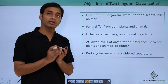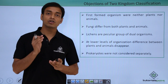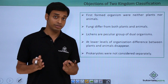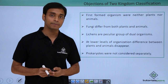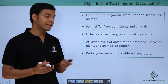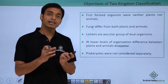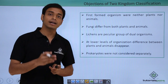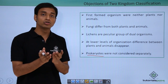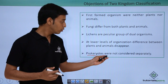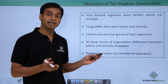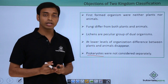Lichens are a peculiar group because they are not a single organism; they are formed by the symbiotic association between a fungus and an alga. At lower levels of organization, the differences between plants and animals disappear. Most importantly, prokaryotes, which do not have a proper or true nucleus, were not considered separately — this is a very big disadvantage of the two kingdom classification.